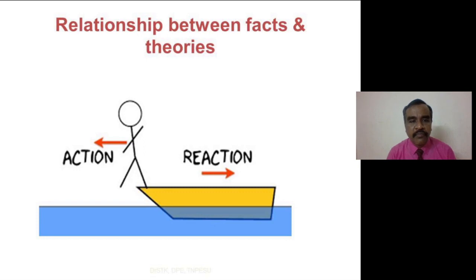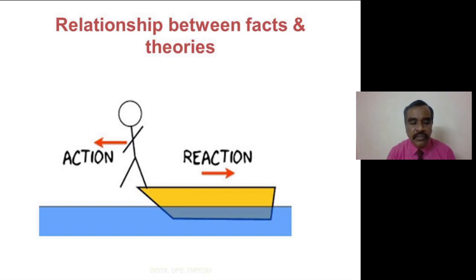Research always finds the relationship between facts and theories. For example, Newton's third law states that for every action there will be an equivalent and opposite reaction. In sports, especially in the sprinting event, we use starting blocks based on this theory. Based on the application of this theory we get the starting block to improve performance. The same way in sports, many applications of theories into practice are because of research.